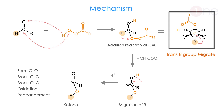Since oxidation and rearrangement are both happening, this reaction is very important. One key point: the migrating group is always anti-periplanar to the peroxide oxygen, so migration happens easily. This anti-periplanar position makes the migration favorable.